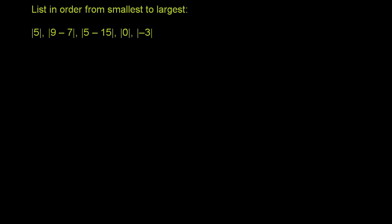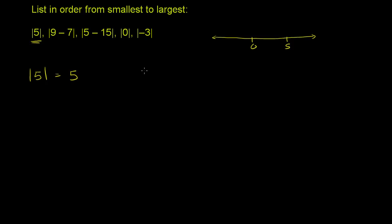So let's think about these numbers. The first one is the absolute value of 5. How far is 5 away from 0? It's 5 away from 0, so it's equal to 5. If I were to actually draw a number line, 0 is here and 5 is over here. This distance right there is 5, so the absolute value of 5 is 5.